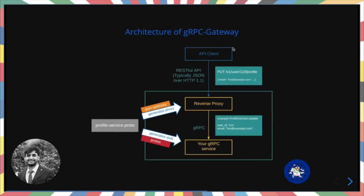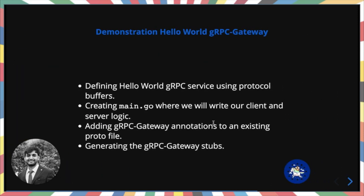This is the architecture of gRPC-gateway. It generates gRPC code with the normal protoc generator, and also generates a reverse proxy with the gRPC-gateway protoc-gen plugin. You start the proxy and it serves an HTTP REST interface, translating JSON requests into protobuf, sending them through the gRPC service, then translating the response back on the way out.